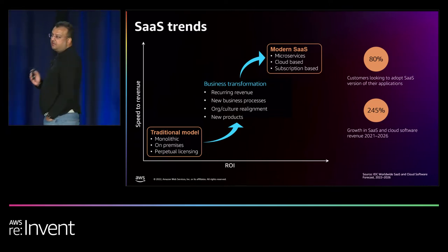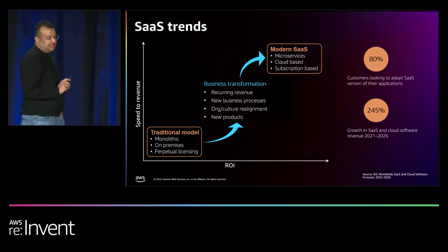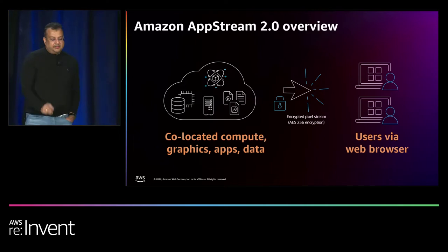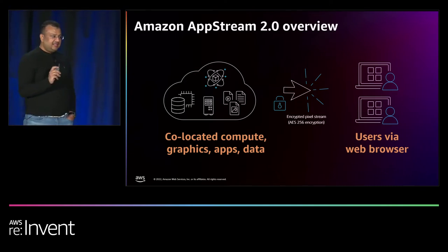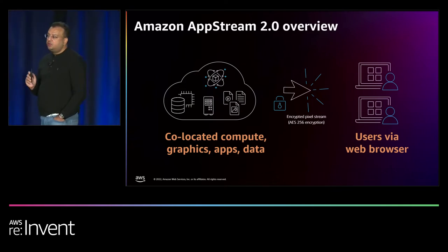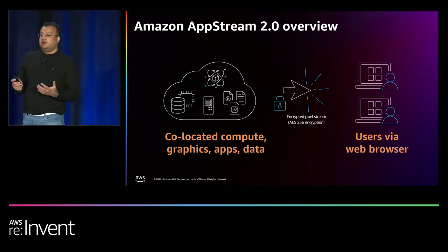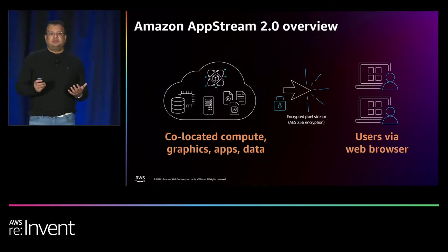With AppStream, you install the native version of your applications in AWS, along with the data they need, in one neat package. AppStream delivers a secure pixel stream of that application to your end users via web browser — no firewall issues, no installs needed. The input from end users is relayed back to the native version of the application deployed in the cloud. This is a very fluid experience; our customers say it is indistinguishable from that native application running locally on the client device.